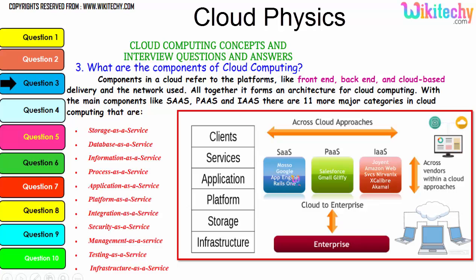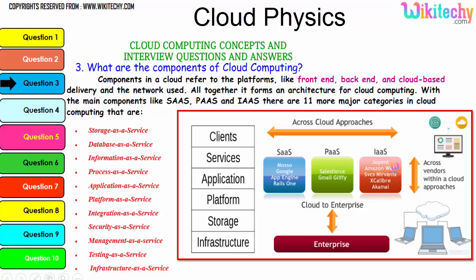For Software as a Service, typical examples are App Engine and Google. For Platform as a Service, examples are Gmail, Glyphi, and Salesforce. For Infrastructure as a Service, there are many companies such as Amazon Web Services, Advanix, Excalibur, Akamai, and others.